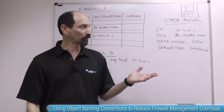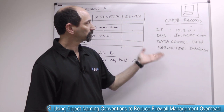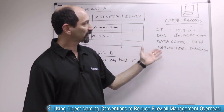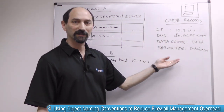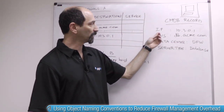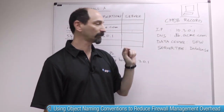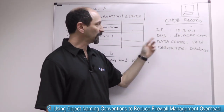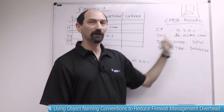What's the story? Assume you have a server in your environment and this is its identity card, this is its CMDB record. It has an IP address, 10.3.0.1, and it has a DNS name, db.acme.com.